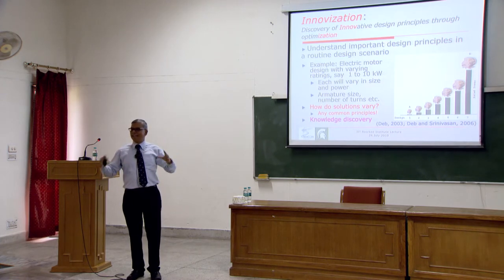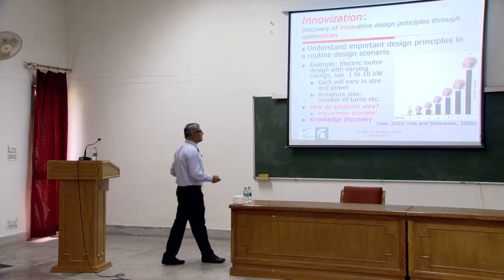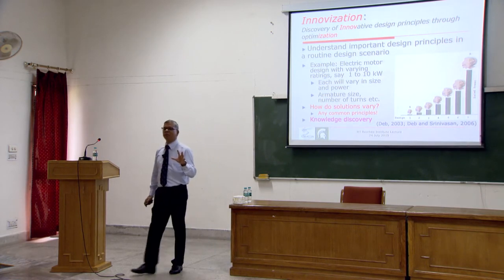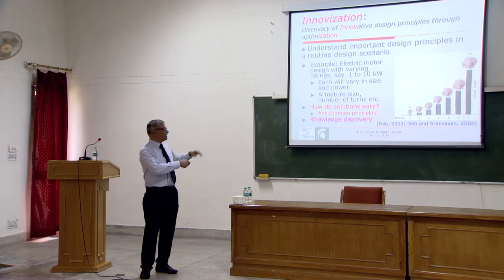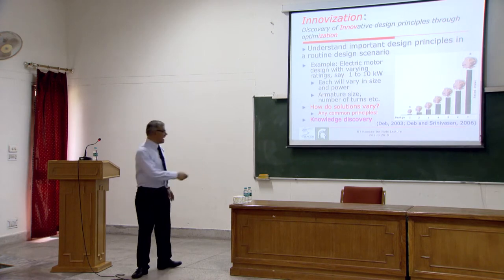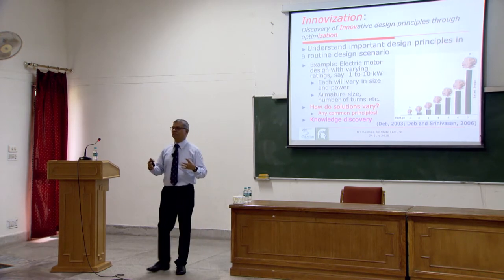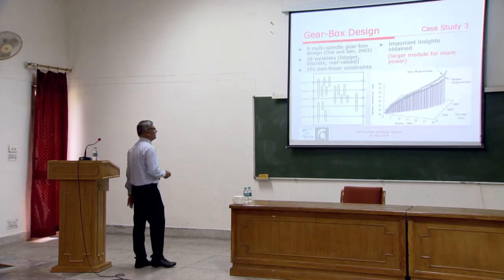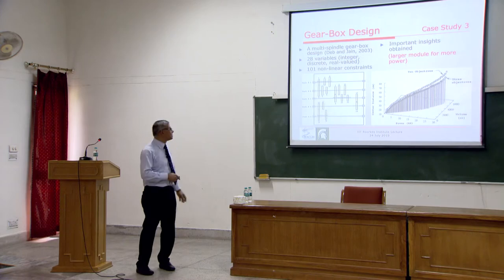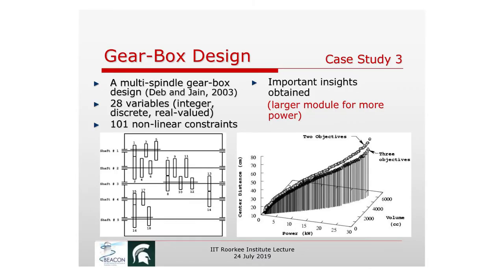The procedure: formulate two or three conflicting criteria, run a multi-objective optimization method to find the Pareto set, then perform data mining and data analytics on those solutions — asking what is common, what is preserved, what features are constant or invariant across the set. We use machine learning methods for this analysis. For example, in a 28-variable gearbox design, we found that 27 of the 28 variables are essentially the same across all Pareto-optimal solutions. The critical variable that changes with power level turns out to be the module, and fitting a curve through that relationship reveals a simple scaling law — that is knowledge discovery through optimization.